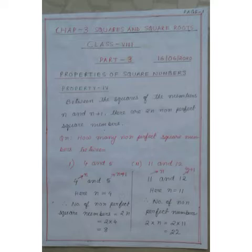I have given one question. How many non-perfect square numbers between 4 and 5? I can assume 4 as n and 5 is n+1. Here n = 4. Therefore, non-perfect square numbers will be 2×n, that is 2×4, which is 8.